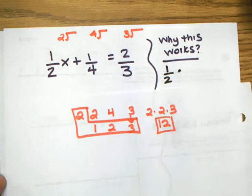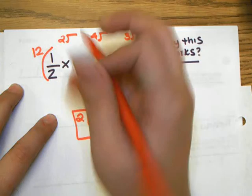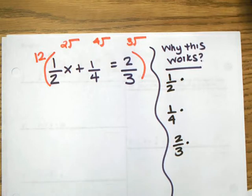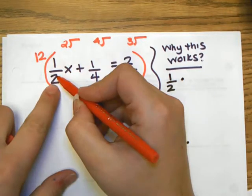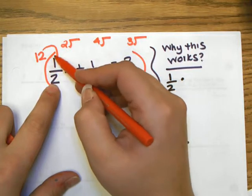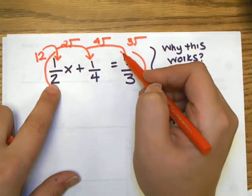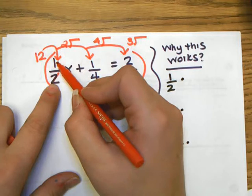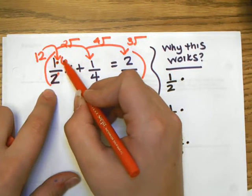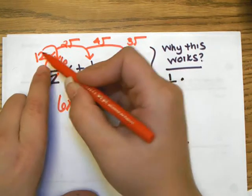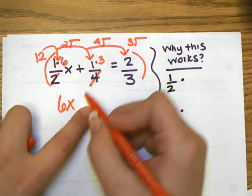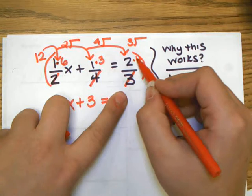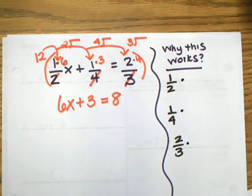That is the number I am going to multiply the whole equation by, 12, because 2 can go into 12, 4 can go into 12, and 3 can go into 12. We are going to use mental math here. We're doing 1/2 times 12, and then 1/4 times 12, and 2/3 times 12 all in our head. 2 is going to go into 12 six times, and then we multiply the numerator straight across. 1 times 6 is 6x. 4 goes into 12 three times, so 1 times 3 is 3. 3 goes into 12 four times, so 2 times 4 is 8. No fractions are now in the equation.